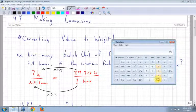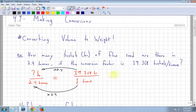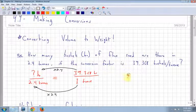You have 39.368 times 2.4, and you get 94.48. And remember, that's bushels. So this is your final answer. You have 94.48 bushels.